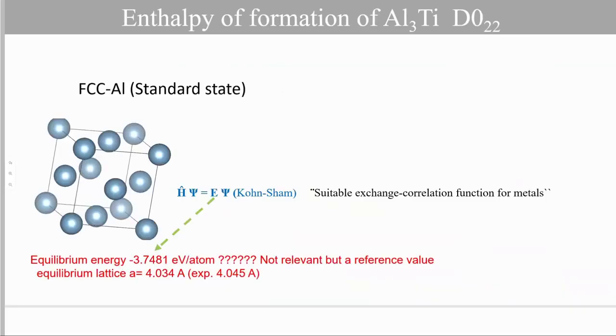Just an example to illustrate the use of DFT in the construction of thermodynamic databases. For example, how to calculate the enthalpy of formation of Al3Ti in D022 structure for which no experimental data have been reported. So first, we calculate the total energy, the energy of the first reference structure, the FCC aluminum, by solving not really the Schrödinger equation but a simplification of it through the Kohn-Sham formalism. After simulation, we get the equilibrium energy, which for the moment has no meaning, it's just a number, and also the equilibrium lattice parameter.